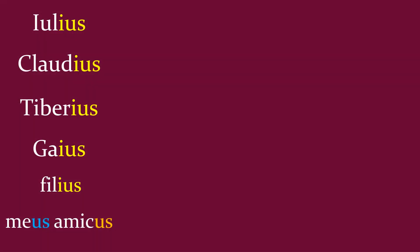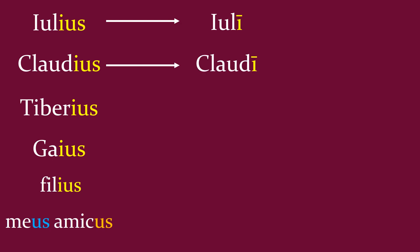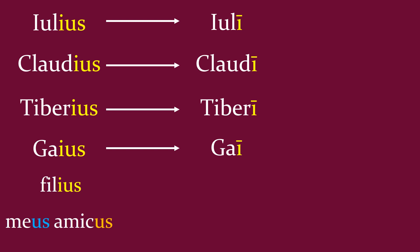Where it gets a little tricky is when the ending is not -us but -eus. So if we have a friend named Julius, that -eus is going to become a long ī: Iuli. Claudius will become Claudi. It's actually two I's pushed together, so we rewrite that as one I with a macron. Tiberius becomes Tiberi. Gaius becomes Gai. And the word filius, meaning son, is going to become fili. So if you're speaking to your son, you'd say, oh son, come here — fili.